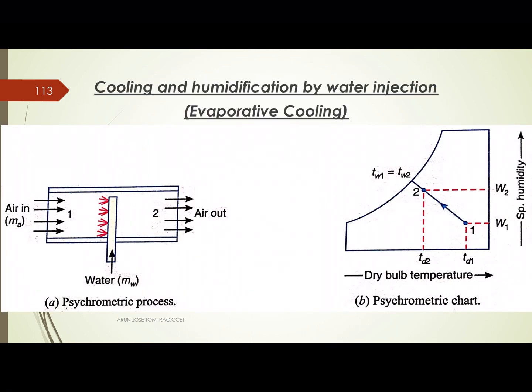In the cooling and humidification process, we spray cold water into the air. The inlet condition is labeled 1 and the exit condition is labeled 2. On the psychrometric chart we have states 1 and 2.